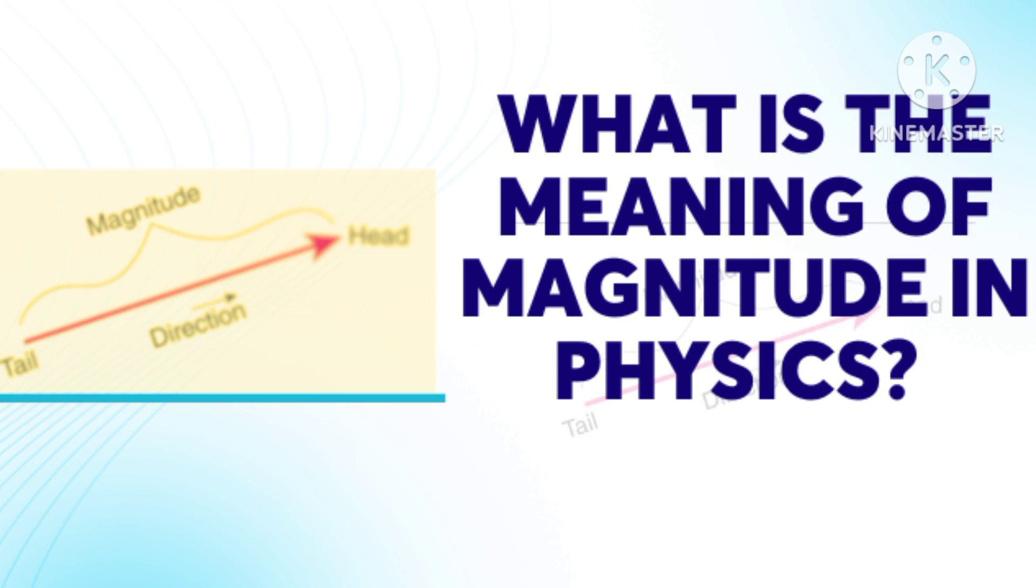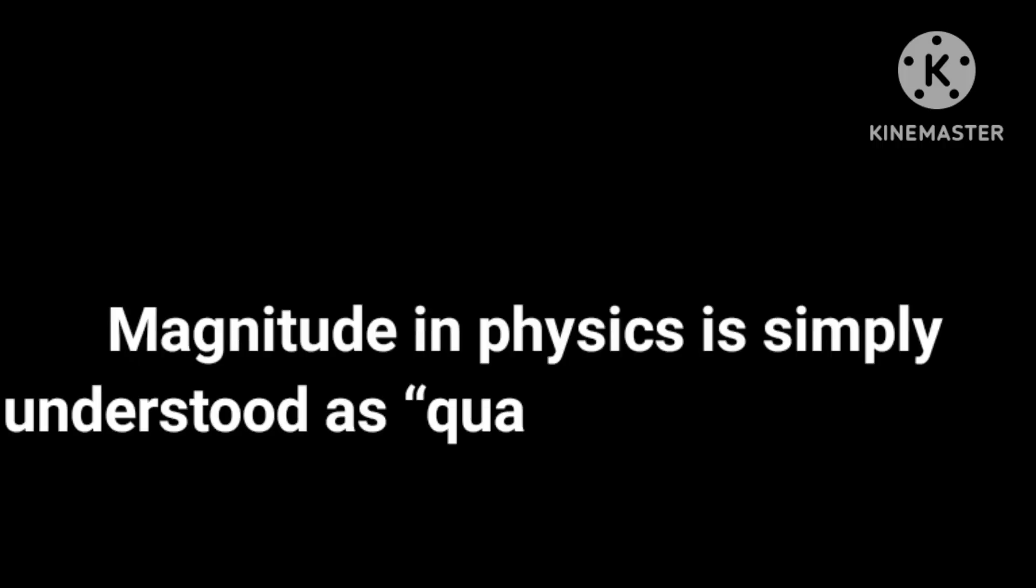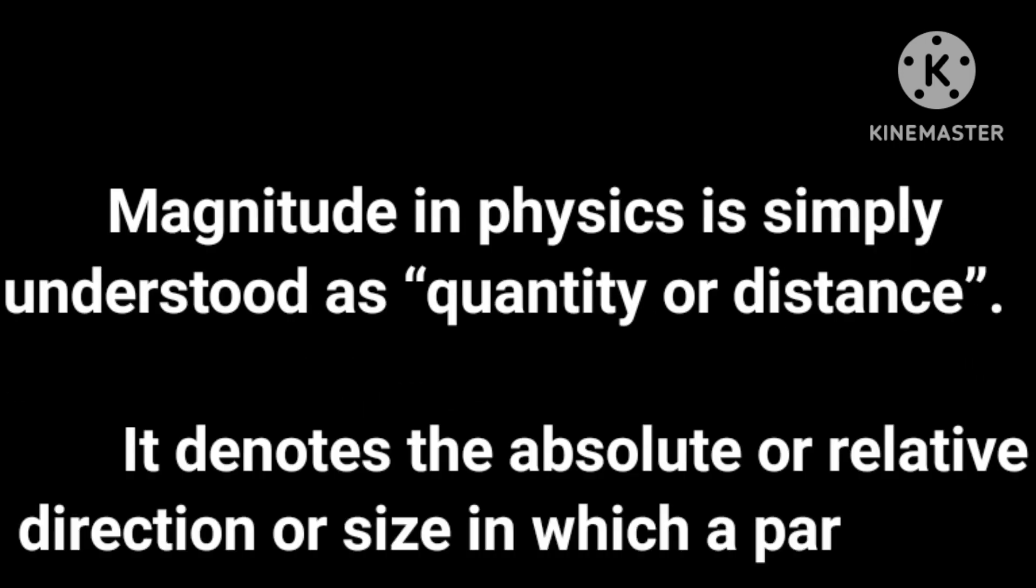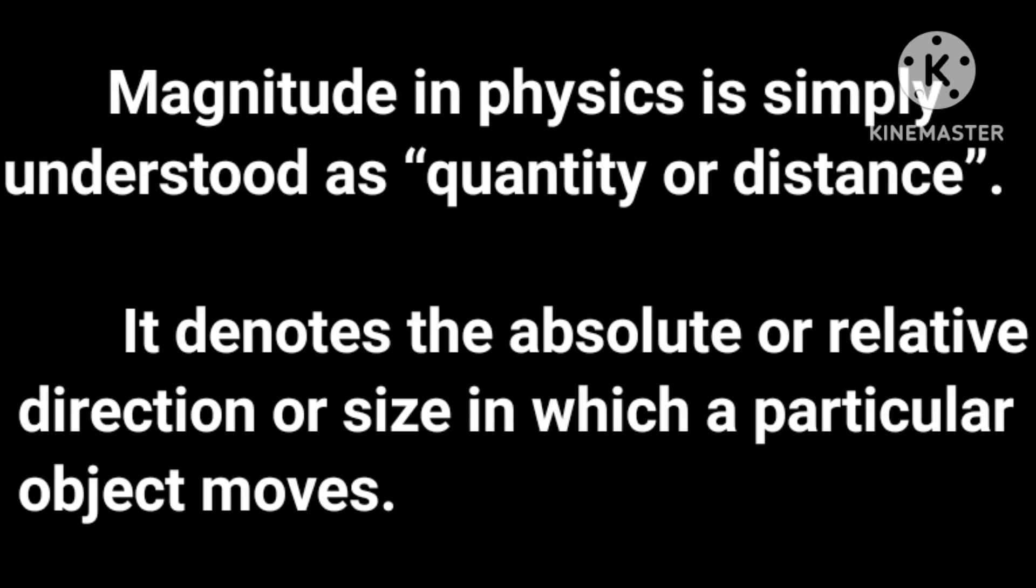Magnitude is a basic term so I know the definition of it. Magnitude in physics is simply understood as quantity or distance and it denotes the absolute or relative direction or size in which a particular object moves. So what is the meaning of magnitude?